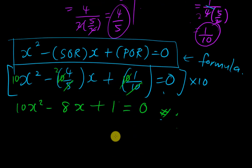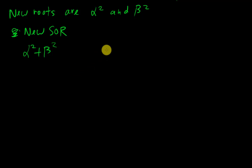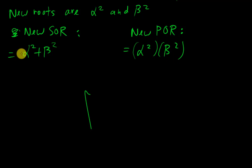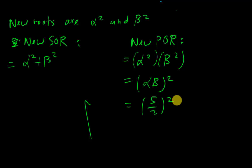Let me change the question slightly so you fully understand. If instead the new roots are alpha squared and beta squared, same approach: form the new sum of roots as alpha² + beta², and the new product of roots as alpha² times beta², which equals (alpha beta)², and since alpha beta equals 5 over 2, this becomes (5/2)² which equals 25 over 4.